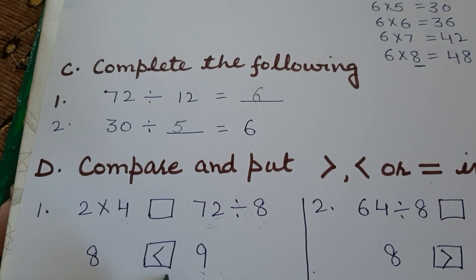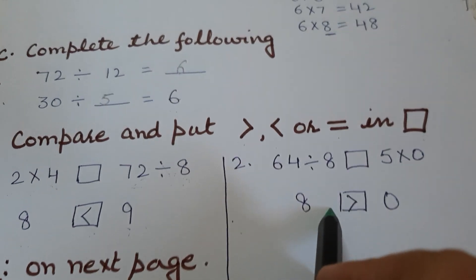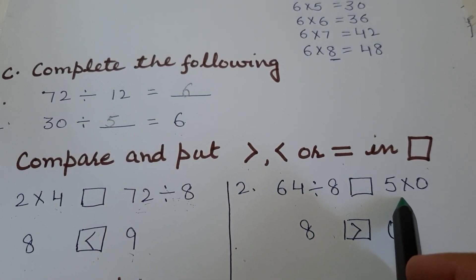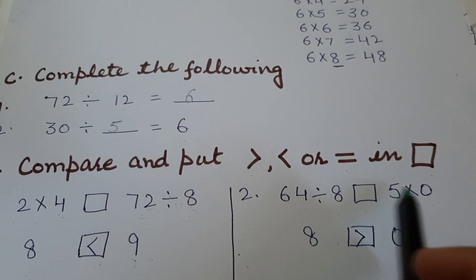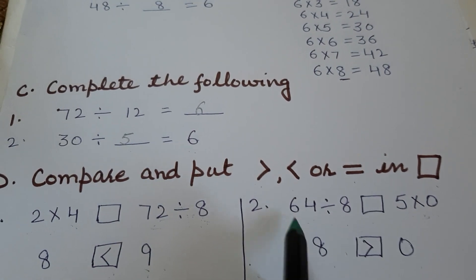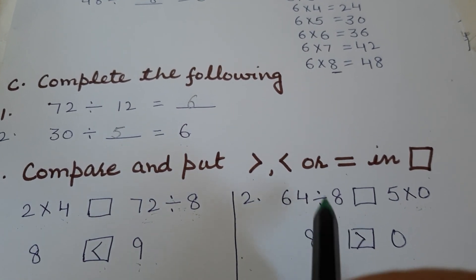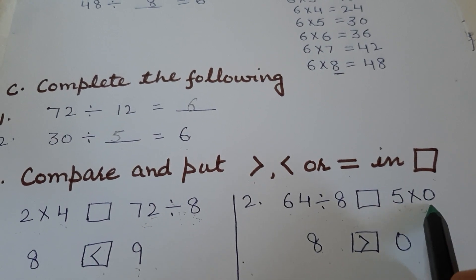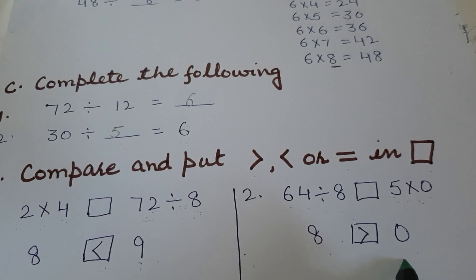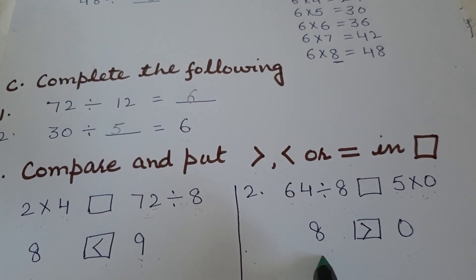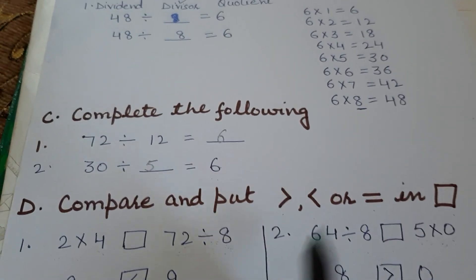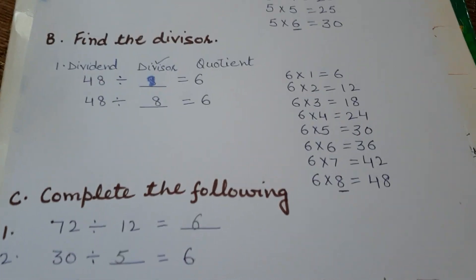Second example: 64 divided by 8 compared to 5 multiplied by 0. Solve both sides: 8 eights are 64, so 64 divided by 8 equals 8. And any number multiplied by zero is always zero. So 8 is bigger than 0, and you put a greater than sign. I hope it's clear to all. Thank you.